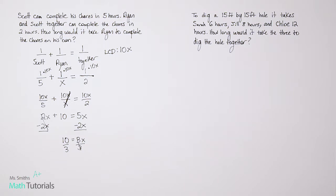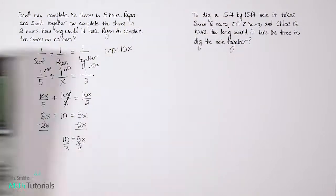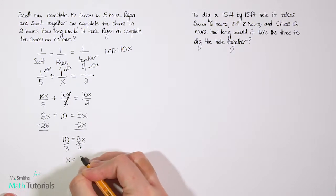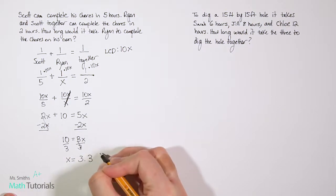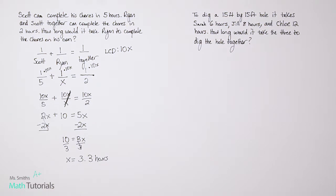And our last step to get x alone is to divide both sides by 3. And 10 divided by 3, again, we're not getting a whole number there. So let's look at what that decimal would be. 10 divided by 3 gives us 3.3 repeating. So again, let's just round to the nearest tenth. Let's just say it's approximately, x is approximately 3.3 hours. So what that tells us is, we know it would take Ryan 3.3 hours if he was doing the chores on his own.